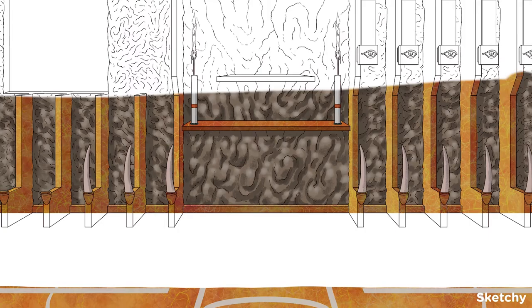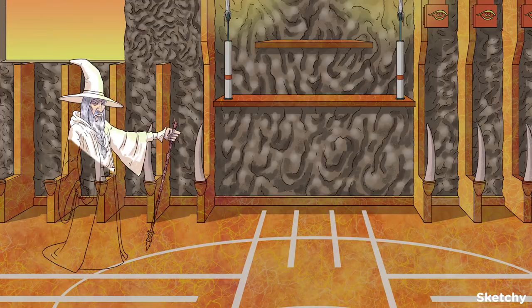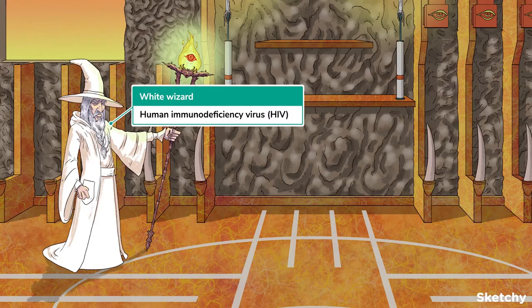An epic war has raged between the evil White Wizard and the T-Squires, a battle that has endured for decades. The battle we're referring to is none other than the one against HIV. Let's draw in our White Wizard, who will represent HIV, also known as Human Immunodeficiency Virus.